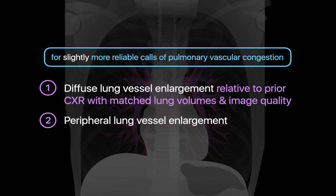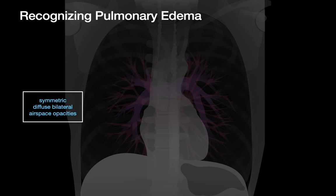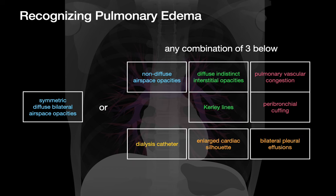Although these rules will help a little, you'll probably still need to incorporate more imaging signal to diagnose pulmonary edema well on a chest x-ray. Consider calling pulmonary edema only in the presence of either symmetric diffuse bilateral consolidation, or when any three of these eight features are present: non-diffuse consolidation, diffuse indistinct interstitial opacities, Kerley lines, pulmonary vascular congestion, peribronchial cuffing, a dialysis catheter, an enlarged cardiac silhouette, or bilateral pleural effusions.